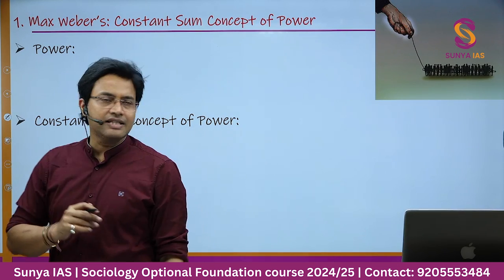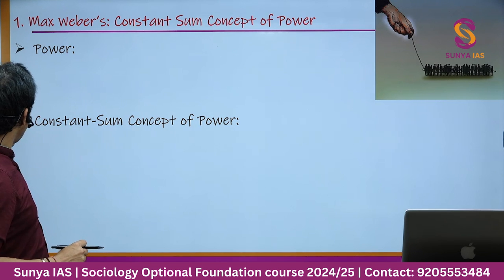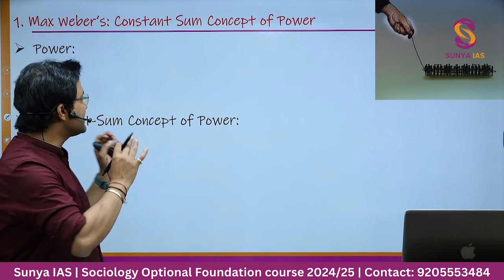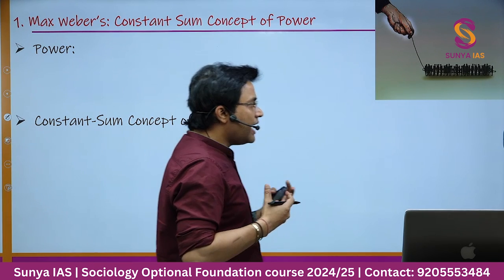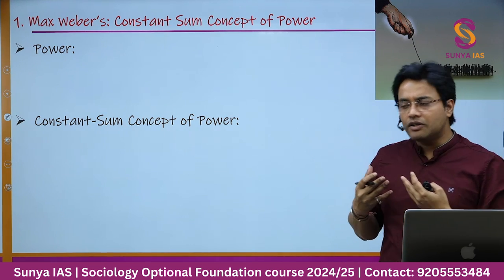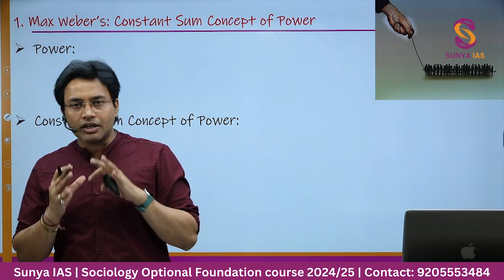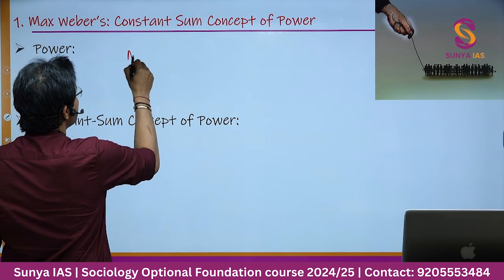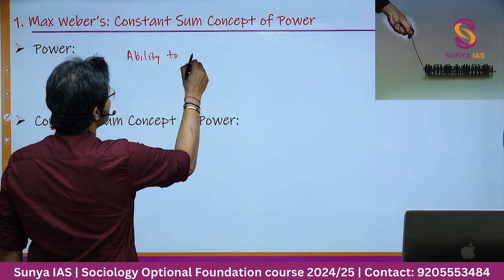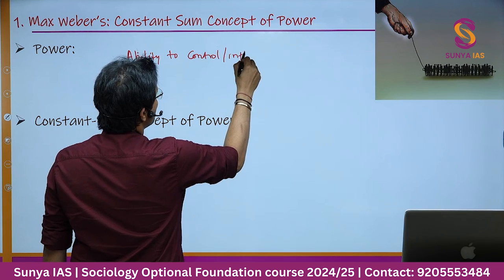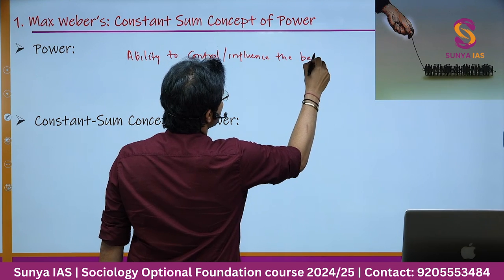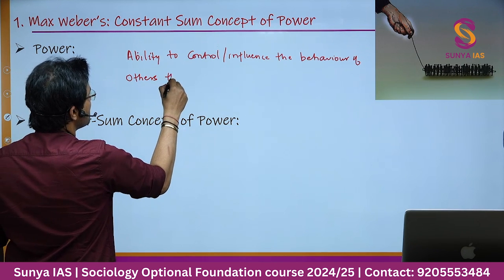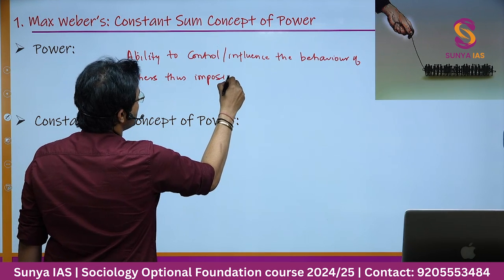Before going into detail about the constant sum concept of power, let me explain what power means in simple language. Power is the ability to control or influence the behavior of others, thus imposing your will on others against their own wishes.